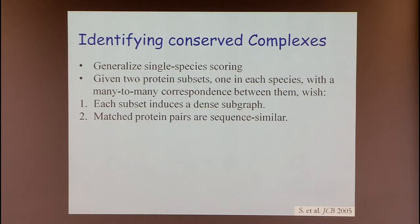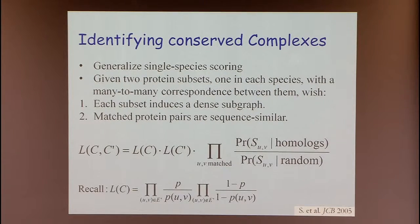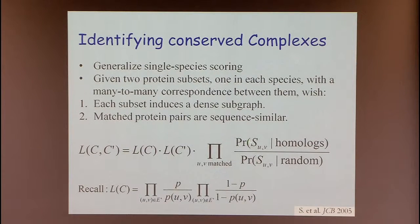How do you attack this computationally? The basic idea used in subsequent work is to generalize single-species scoring. In a single species we search for dense subgraphs; here we also search for dense subgraphs, but with the additional requirement that the subgraphs match in their sequences. You can write a likelihood ratio score similar to before that talks about the density of each set identified but also ties them together by requiring that for every matched protein pair, their similarity exceeds random expectation.